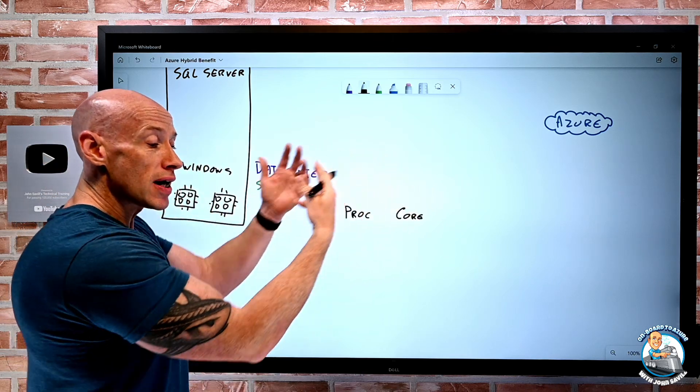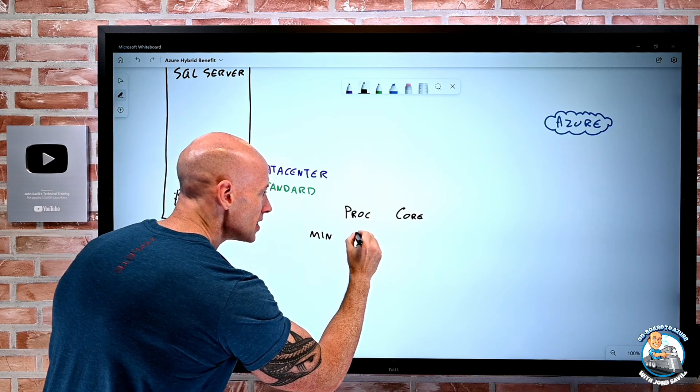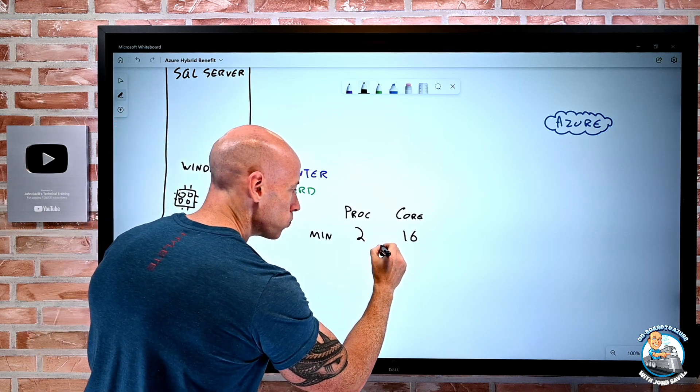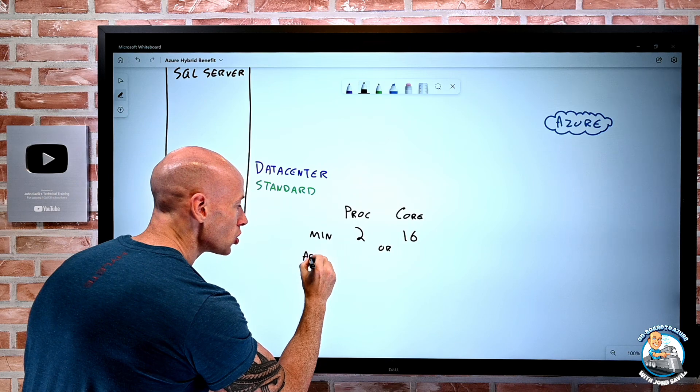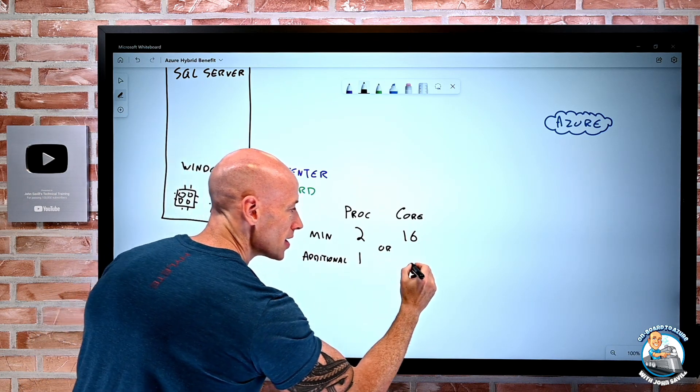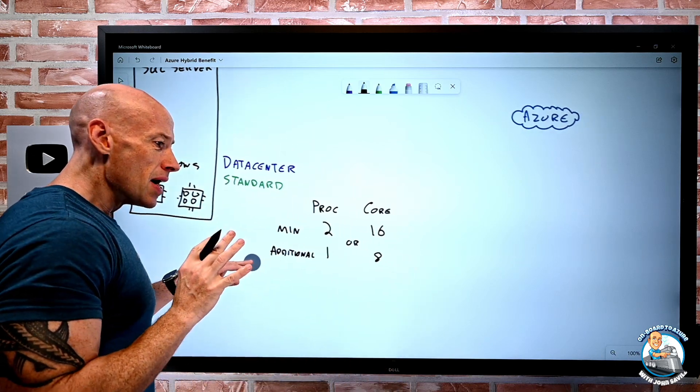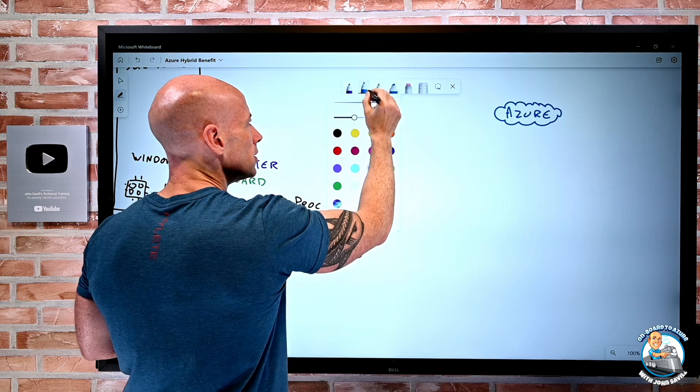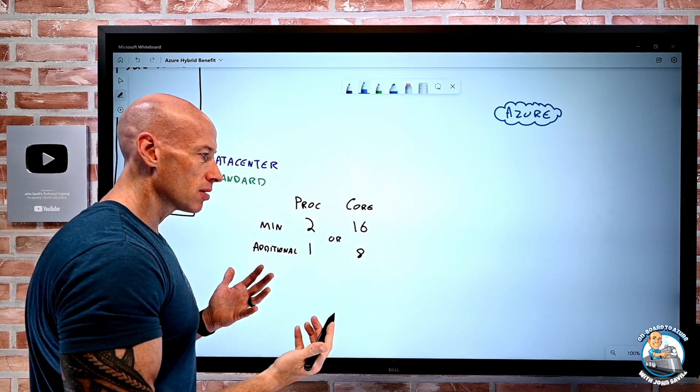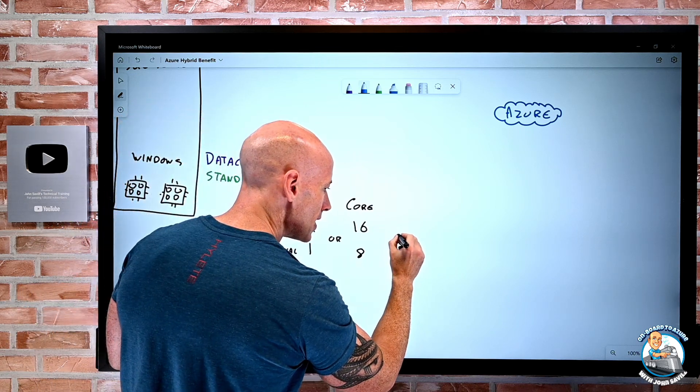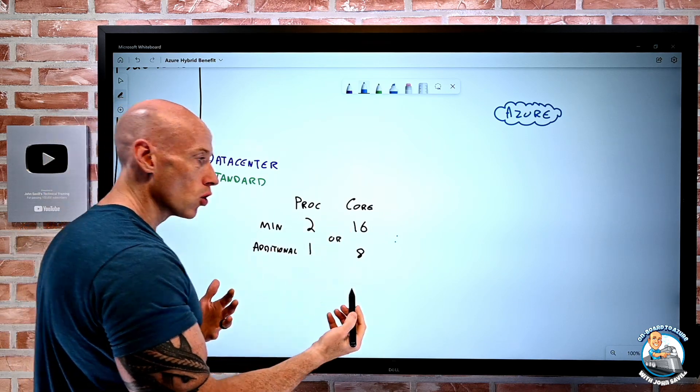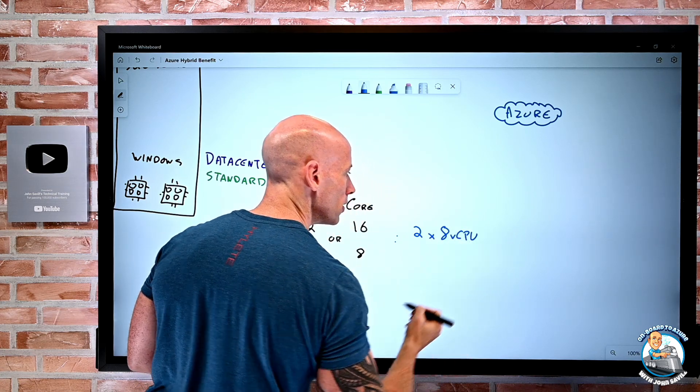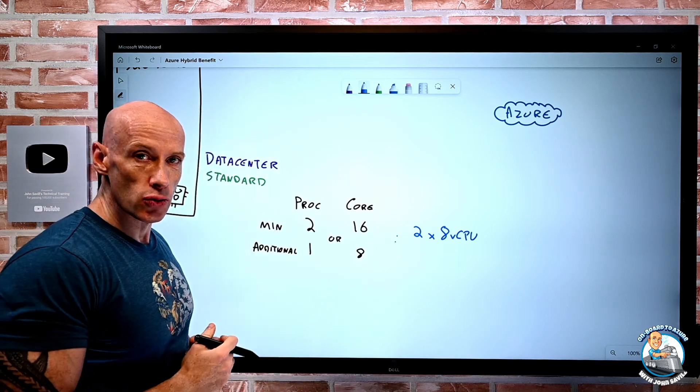Now to get started with the Azure Hybrid Benefit and bring those to Azure, at minimum to start, it's either two processors or 16 cores worth. I can have additional processor licenses or sets of eight cores. This is now going to map to the ability to apply that license to Azure Virtual Machines. And the ratio I'm going to get is essentially, if it's two processors or 16 cores, that gets me the ability to run two eight vCPU virtual machines, or one 16 virtual CPU virtual machine.